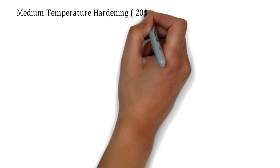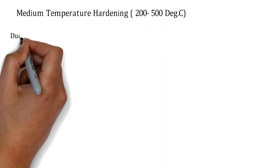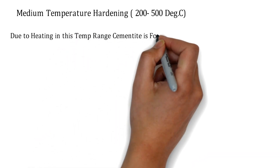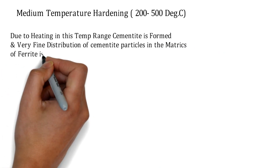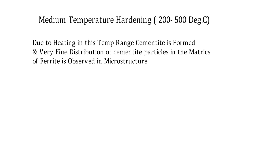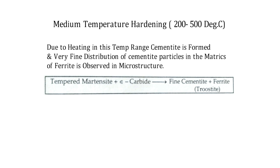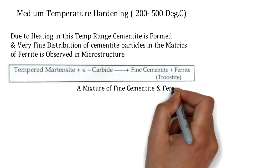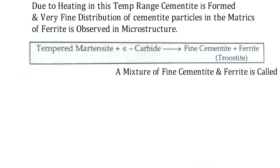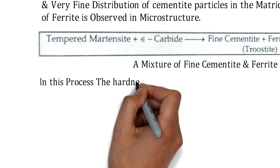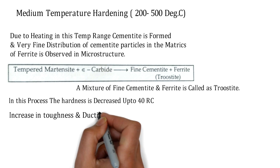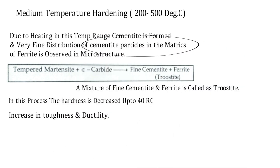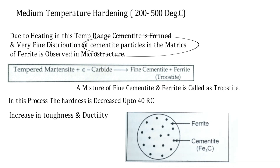Medium temperature tempering is done at 200 to 500 degrees Celsius. Due to heating in this temperature range, cementite is formed, and a very fine distribution of cementite particles in the ferrite matrix is observed in the microstructure. This tempered martensite plus carbide gives fine cementite plus ferrite, which is called troostite — the mixture of fine cementite and ferrite. In this process, hardness decreases to approximately 40 Rockwell hardness, while toughness and ductility increase.